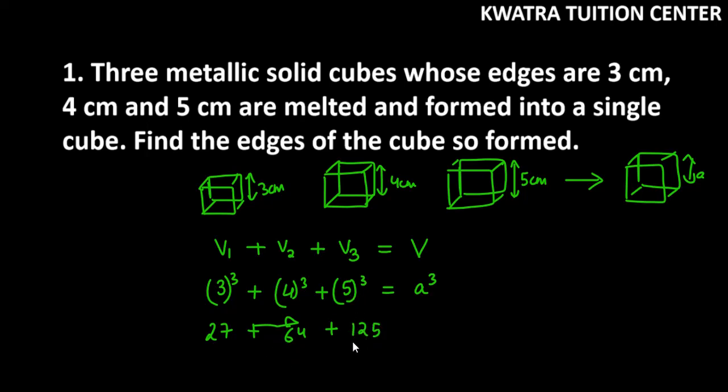Then after this we have 5 cube as 125. Now let's add these three terms. So we have 27, 64, and then we have 125. This will give us 216, and it equals a cube.